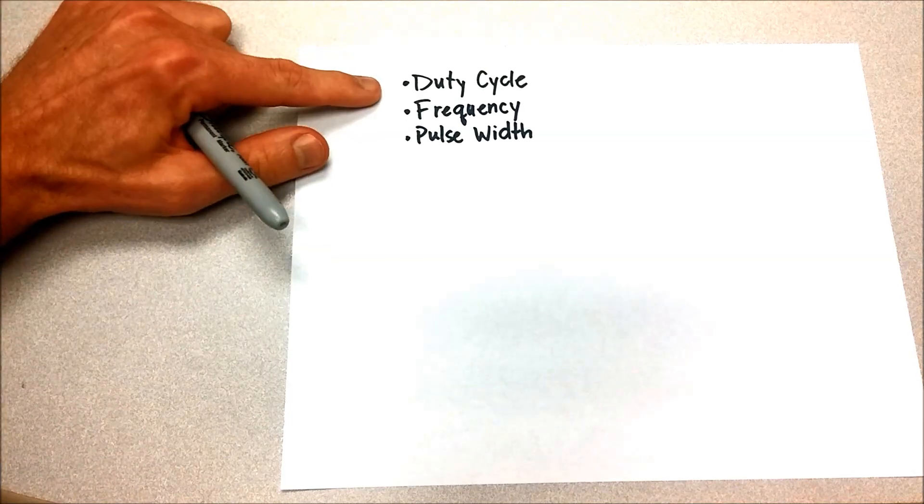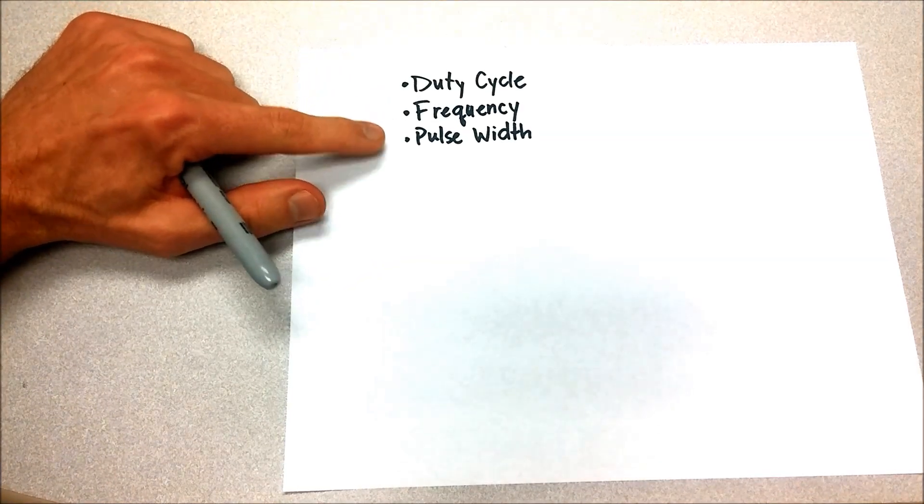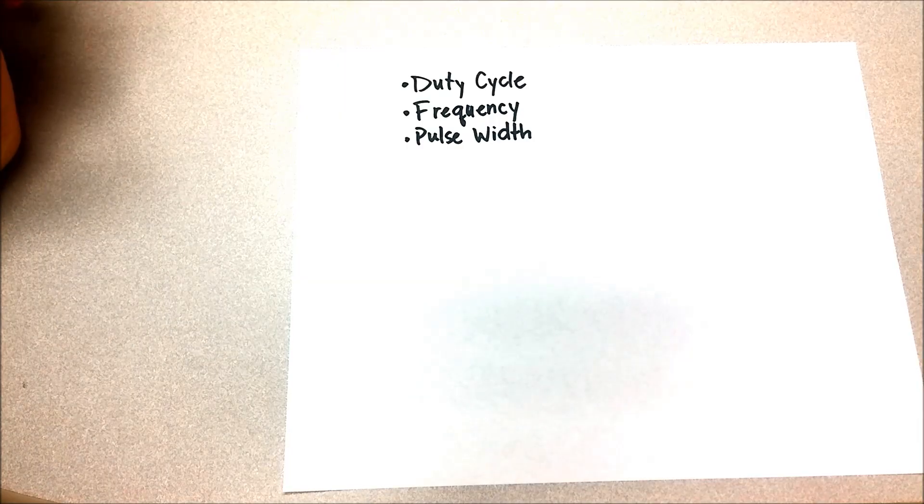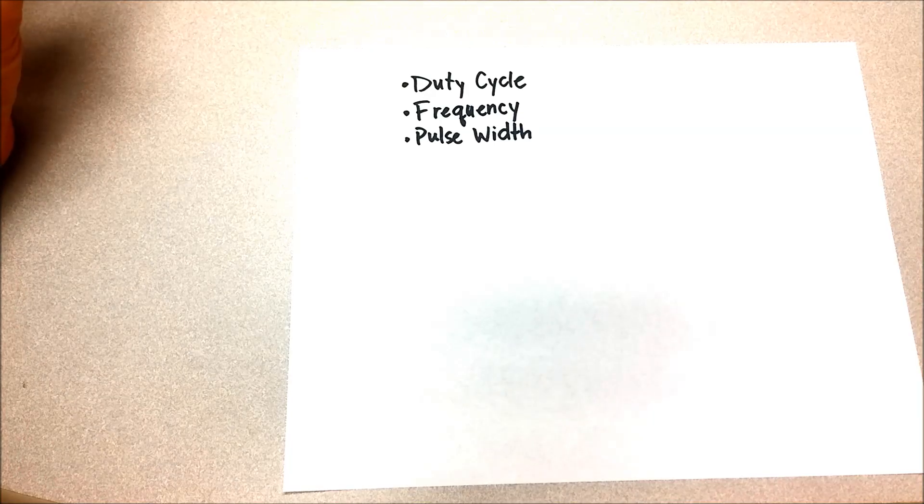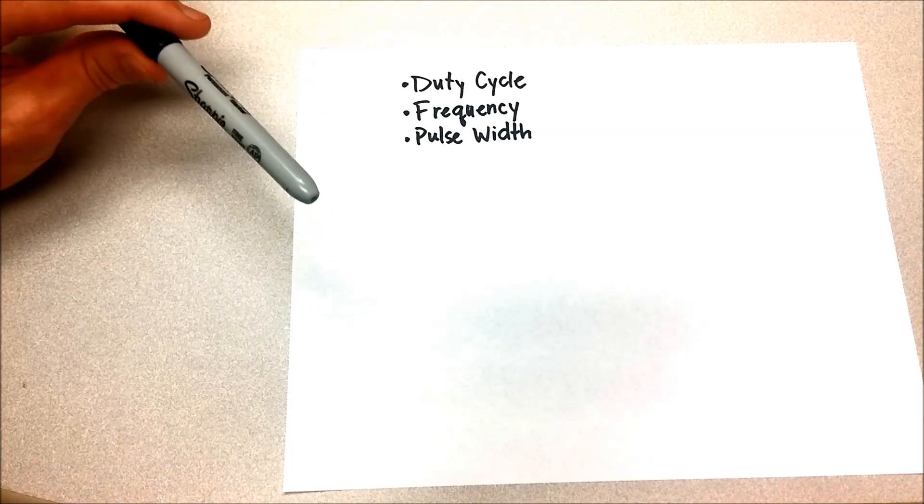I am going to explain the difference between duty cycle, frequency, and pulse width. These terms are often used together, sometimes used interchangeably, and they're often confused, but they have different meanings, and I'm going to take a minute and explain that.